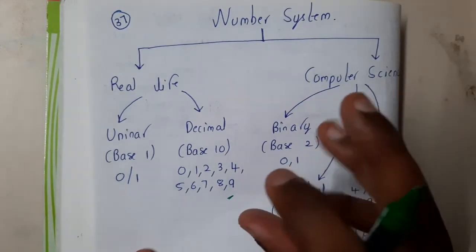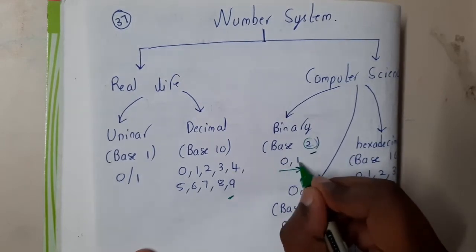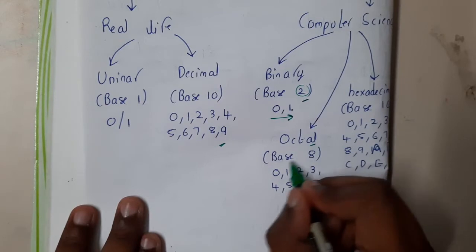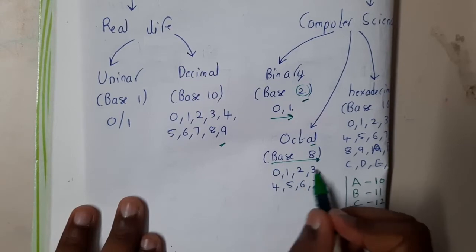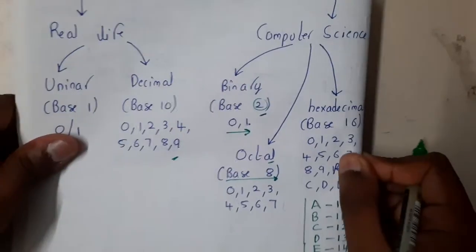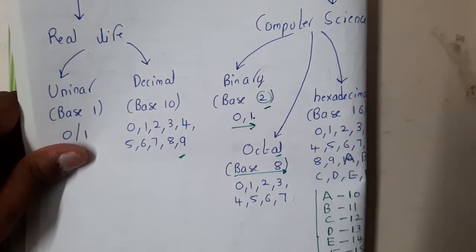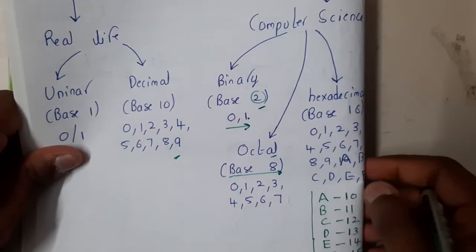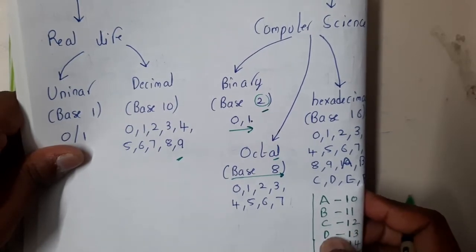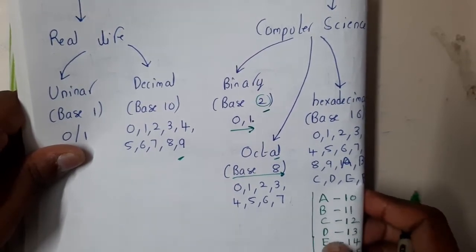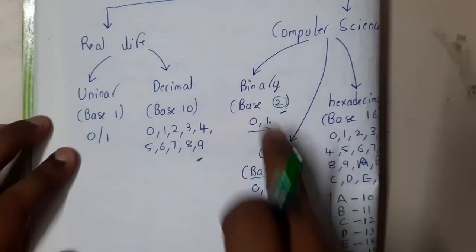In computer science we work with bases. Base 2 means only two digits: 0 and 1. Octal is base 8, with digits 0 to 7 — 8 elements total. Hexadecimal is base 16: digits 0 to 9 plus alphabets A, B, C, D, E, F, where A = 10, B = 11, C = 12, D = 13, E = 14, and F = 15.